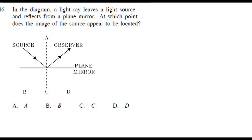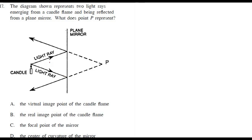At which point does the image form? There is a source of light, the light bounces and reaches the observer. The eye of the observer is here, and the observer thinks the ray is coming from somewhere behind the mirror. Since this is a plane mirror, the image is formed at exactly the same distance behind the mirror. Option B is the correct answer.